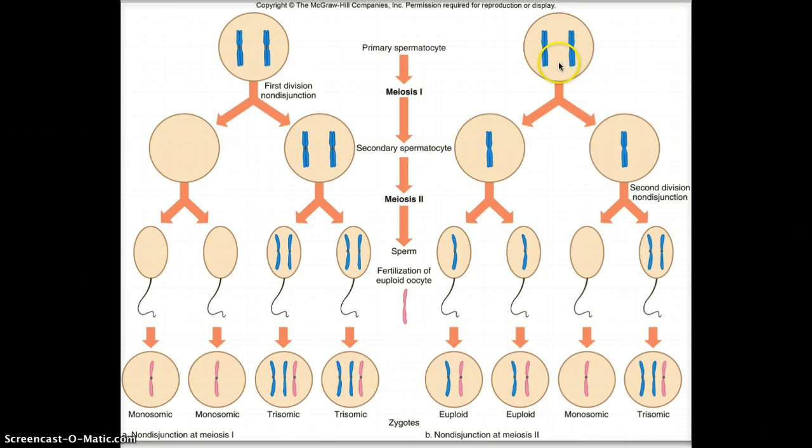If we look on this side, so here we have non-disjunction occurring during meiosis two. So meiosis one occurs normally, the homologous chromosomes separate correctly. And then during meiosis two, the sister chromatids should separate. So here they've separated correctly, but on this side, we have non-disjunction occurring. So again, we end up with one cell that has none of that particular chromosome, and another cell that has two copies of that particular chromosome.